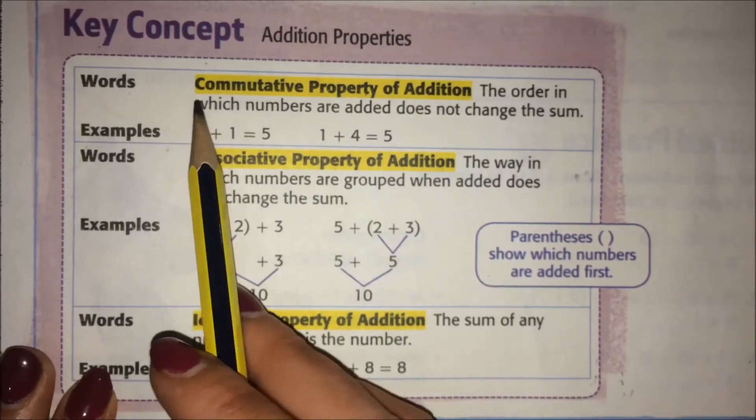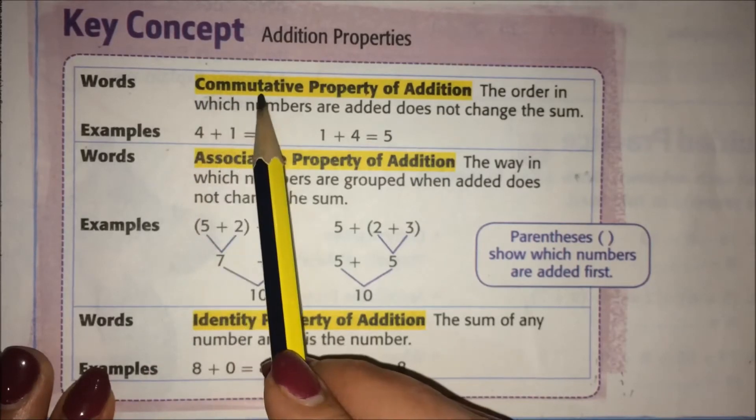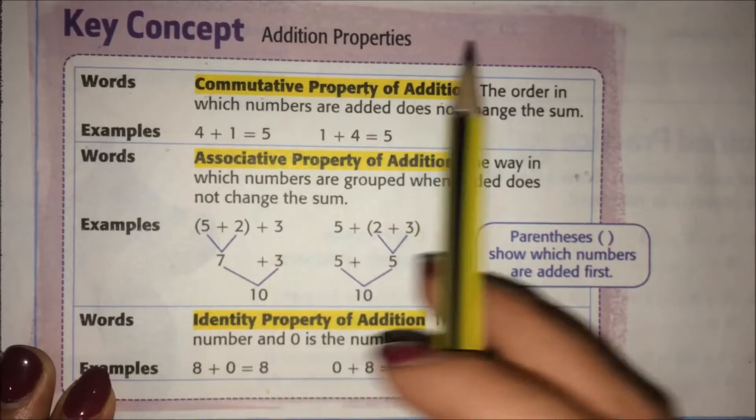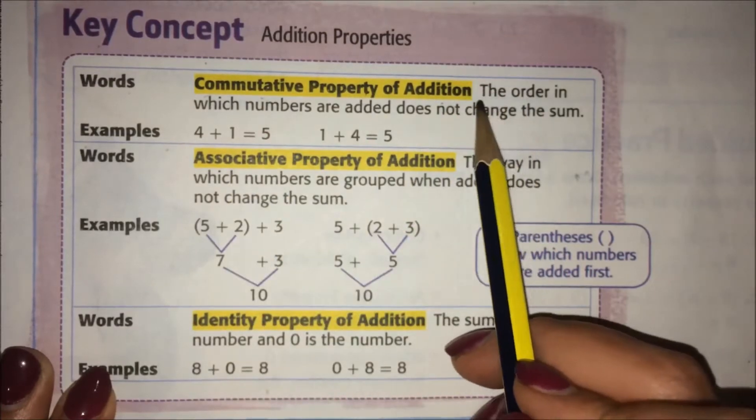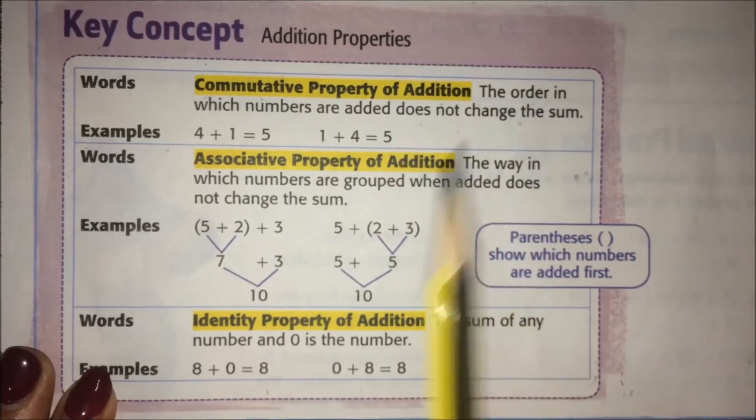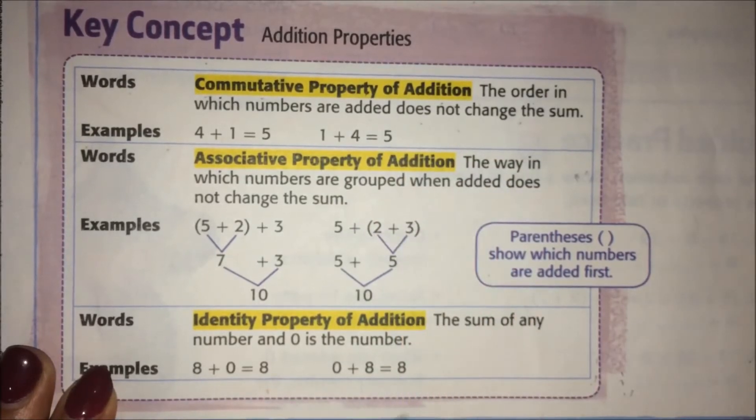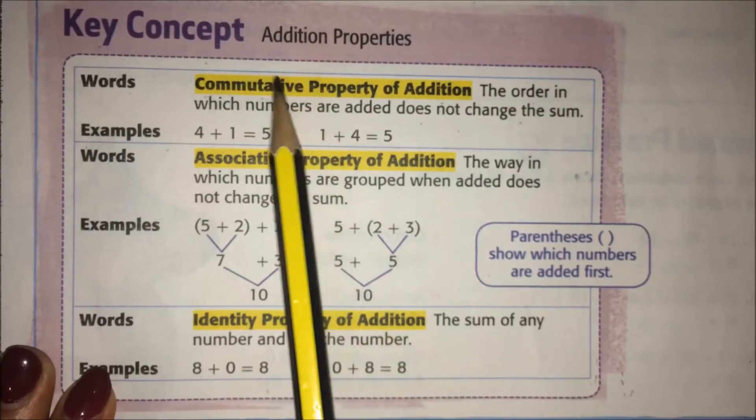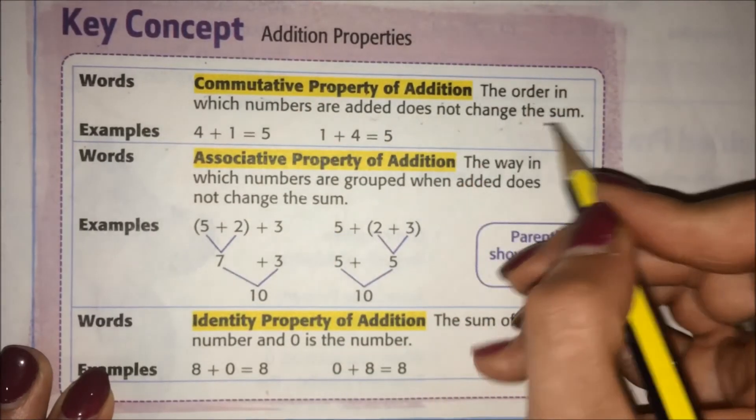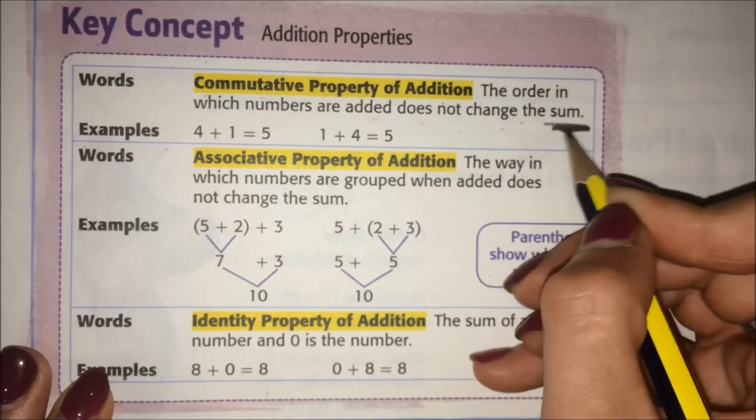Let's go over these. First we have the commutative property of addition. It means the order in which numbers are added does not change the sum. Let me say it again: the order in which numbers are added does not change the sum. A sum is the answer to any addition problem.